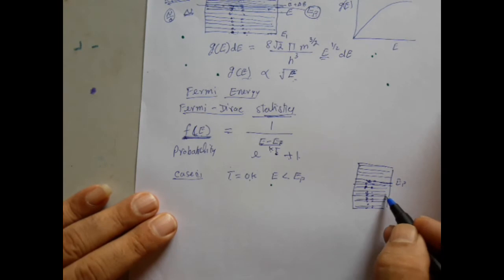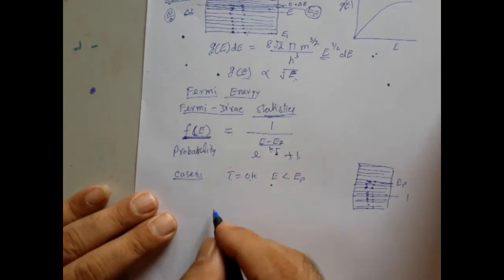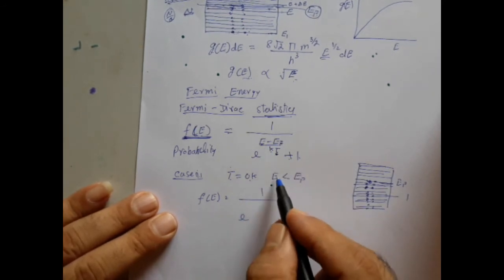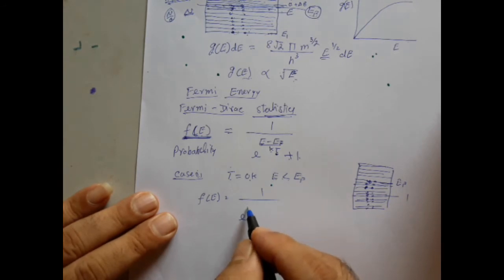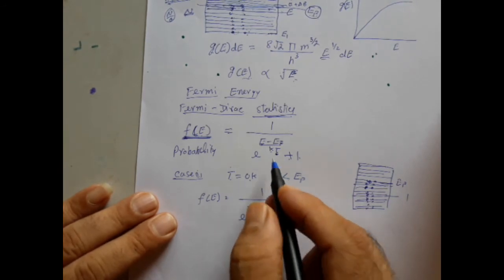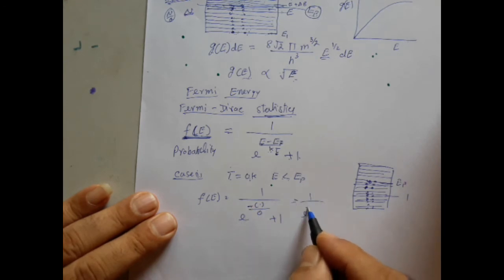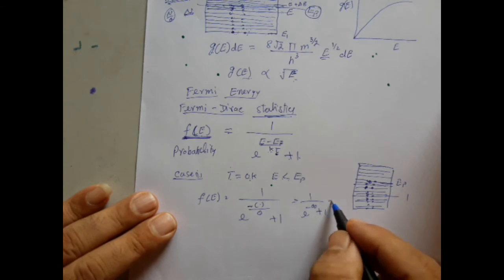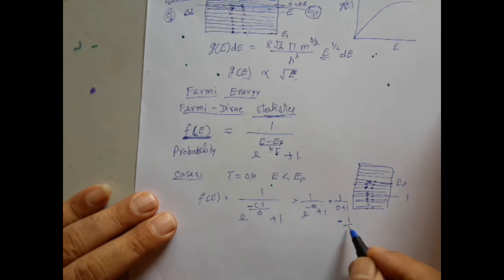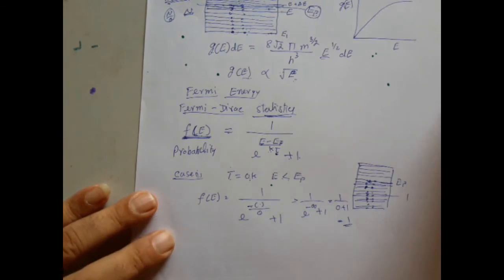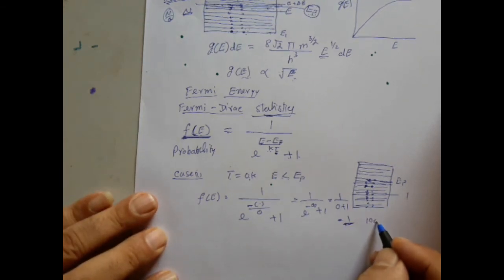Verifying this result: F(E) = 1 / e^((E−EF)/kT) + 1. Since E < EF, the exponent is negative. Dividing by T = 0 gives e^(−∞), which equals 0. So F(E) = 1/(0+1) = 1. There is 100% probability of finding electrons below the Fermi level at each energy level at absolute zero Kelvin.